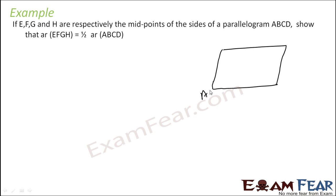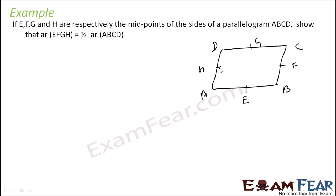Okay. And then in parallelogram ABCD, E, F, G, H are the midpoints of the sides. E, F, G, and H are midpoints. If you do that, area of EFGH equals area of ABCD.